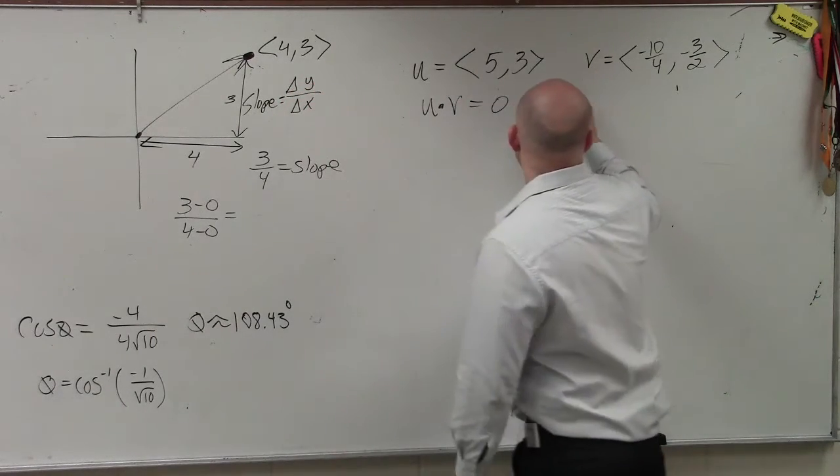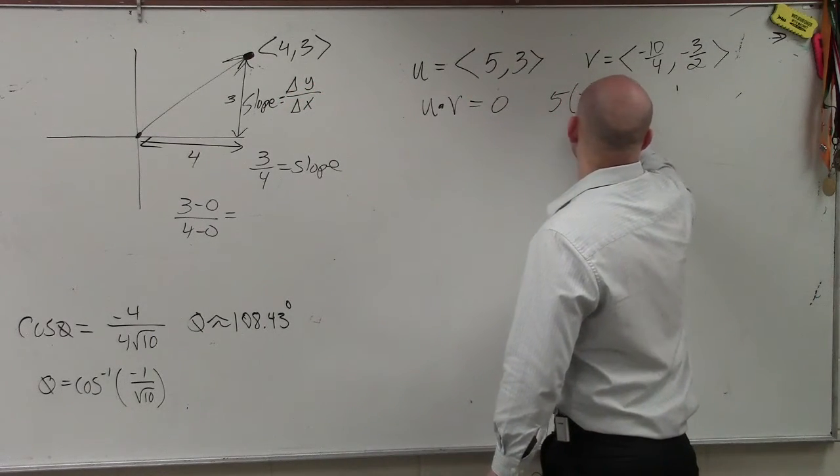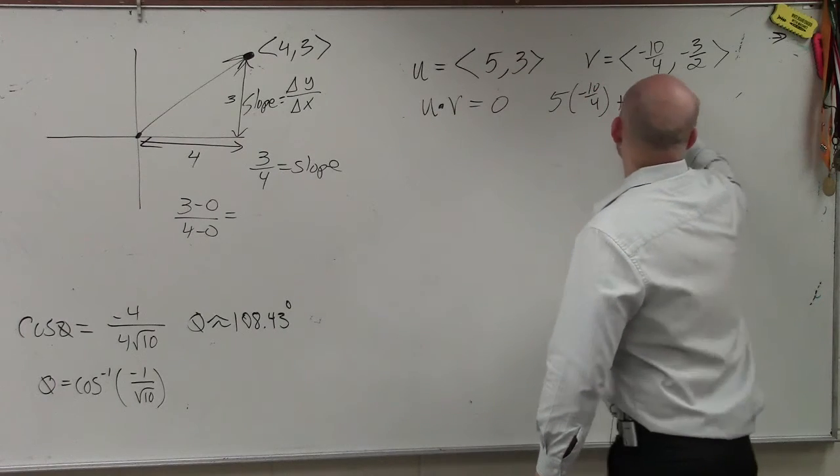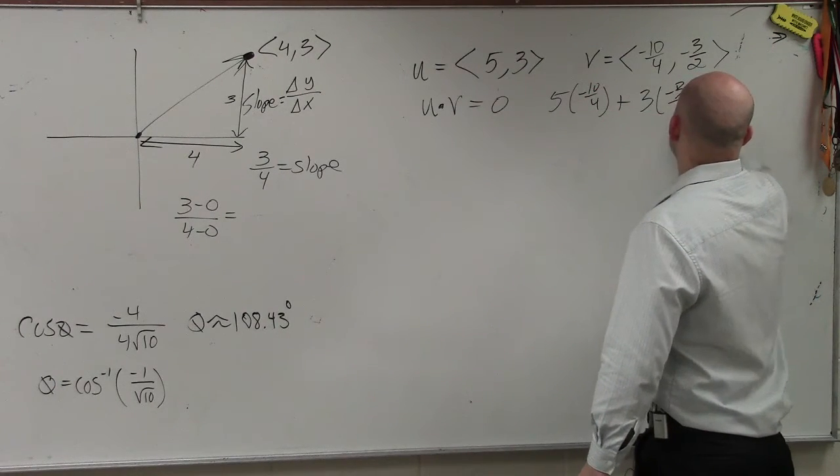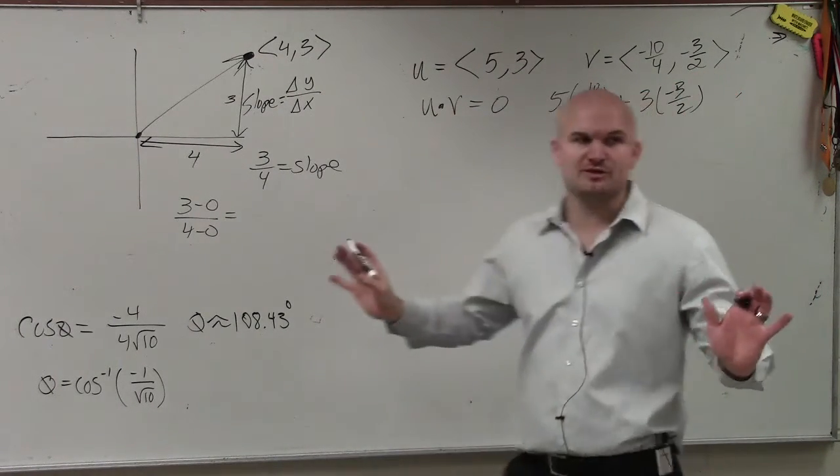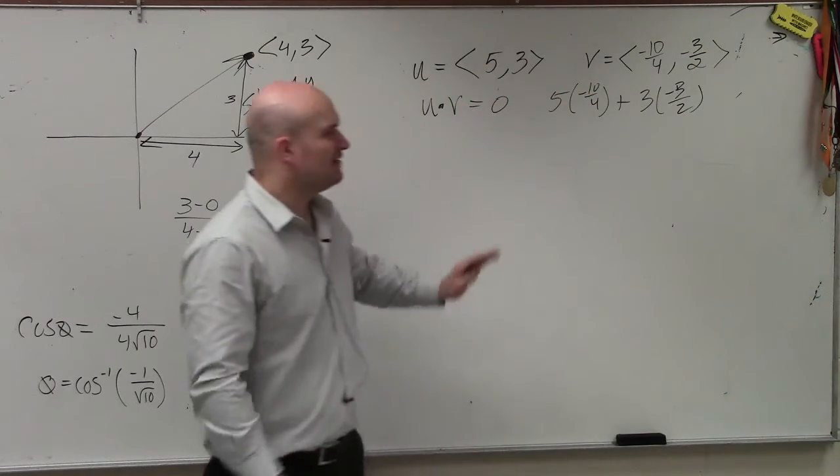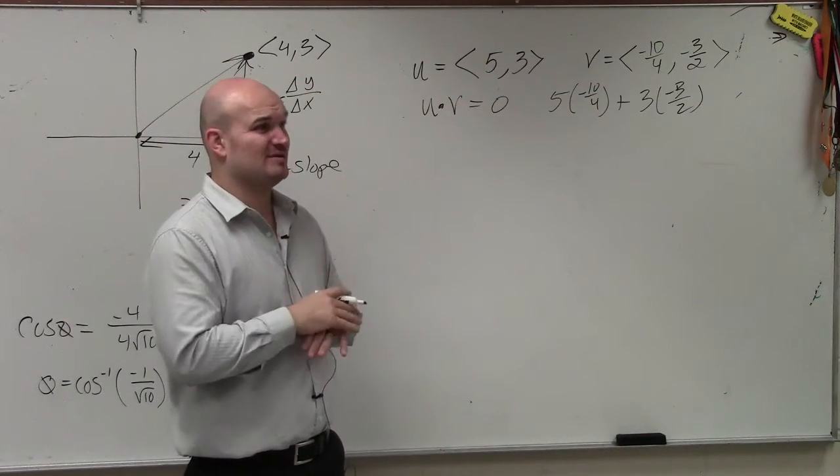However, if you guys were going to do the dot product of this, 5 times negative 10 over 4, plus 3 times negative 3 over 2, and then add those up, you can definitely do that, and that's not too bad. However, before I even did that, I would recommend doing the slopes.